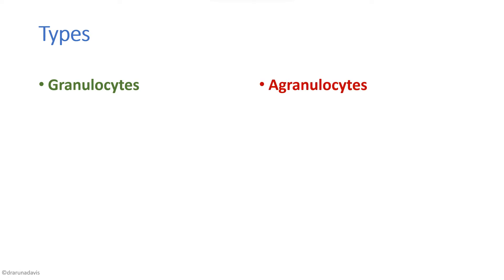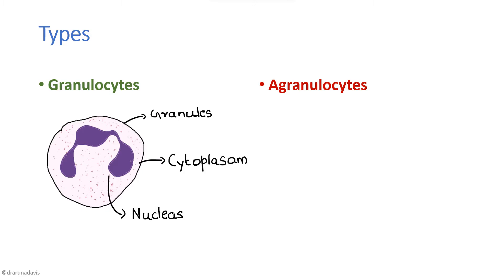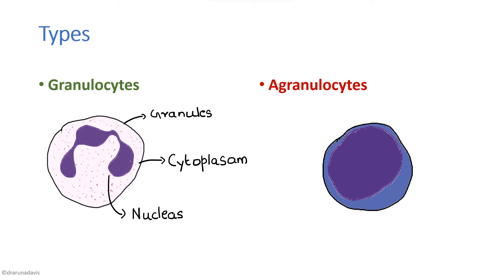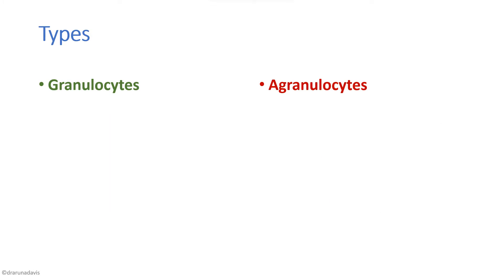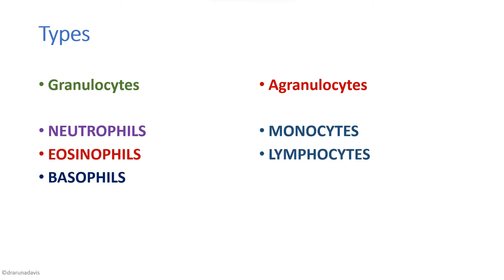A quick revision on the classification of WBCs: white blood cells are classified into granulocytes as well as agranulocytes based on the presence of granules in their cytoplasm. Granulocytes have granules in the cytoplasm whereas agranulocytes are devoid of any granules. Granulocytes include the neutrophil, eosinophil, and basophil, whereas agranulocytes are the monocytes and lymphocytes.